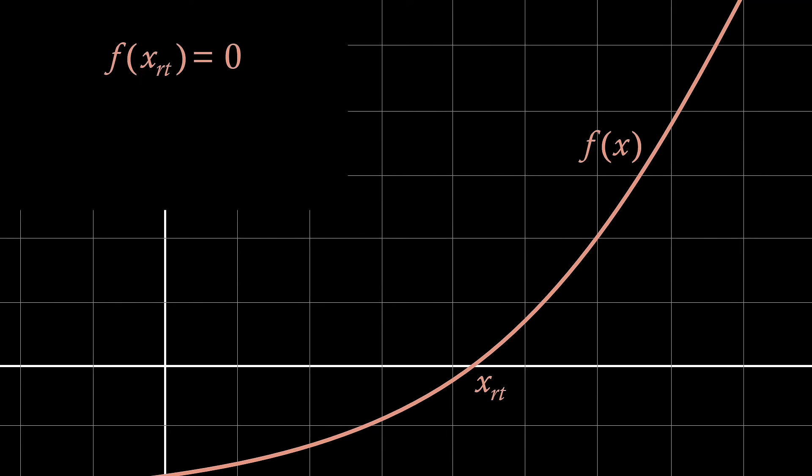Now, consider taking a good first guess at the root to be x0, and define h to be the difference between our first guess and the actual root. Clearly, the root must just equal x0 plus h. Therefore, f evaluated at the root is the same as f evaluated at x0 plus h, with both being 0.